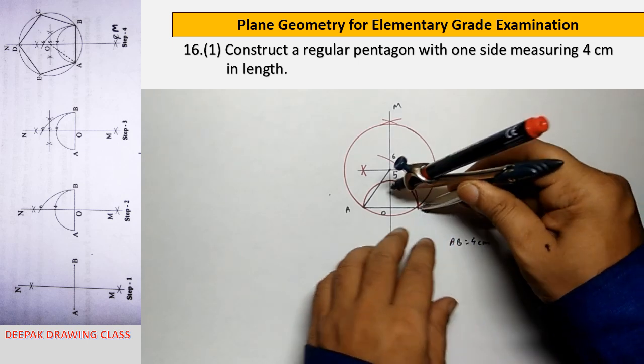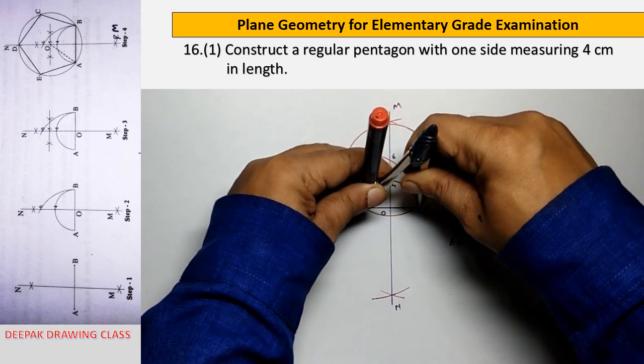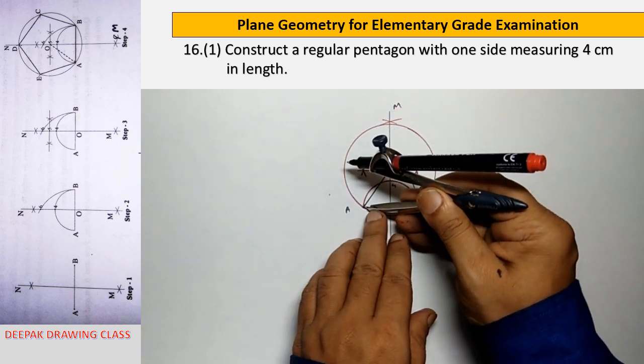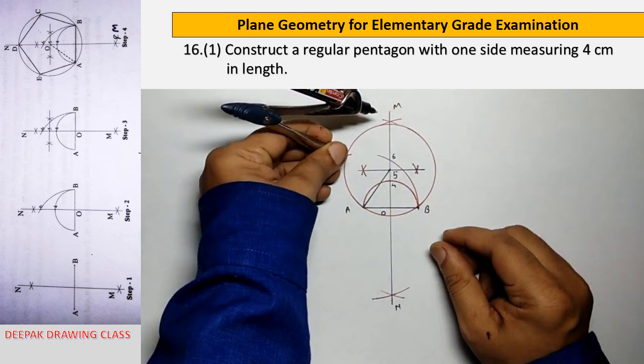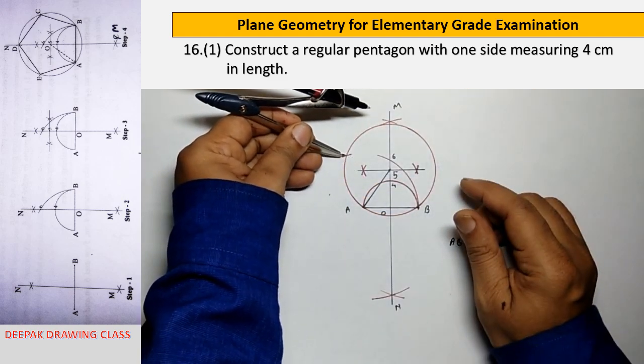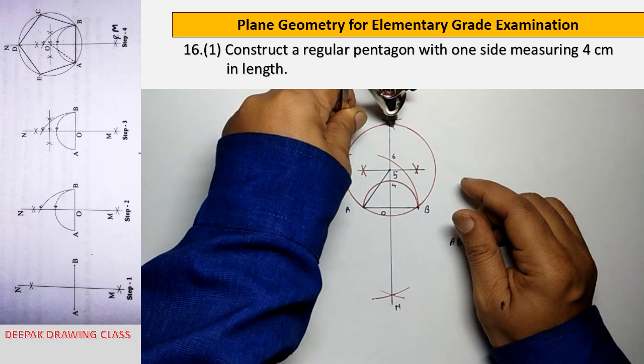With radius AB, divide the circumference into five equal parts by making arcs on the circumference starting from point A, then B, then C, then E, and finally D.